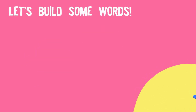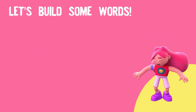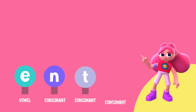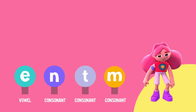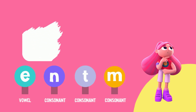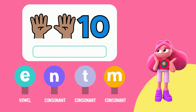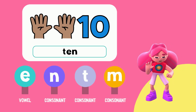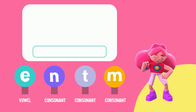Now that we've gone over all the letter sounds we'll be using to build our words today, we're ready to start building. Here are the four letter options: E, N, T, and M. How do you spell the word ten? Ten is spelled T-E-N. Nice work. Let's move on to the next word.